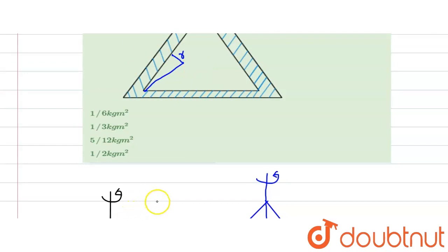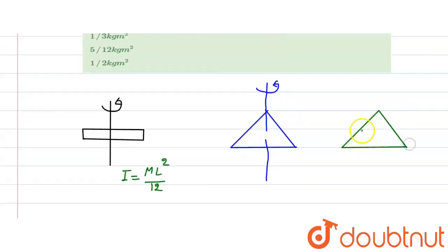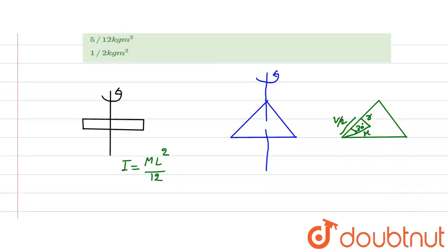The total length is l, so each half-length is l/2. Drawing the triangle, we need to find the perpendicular distance r from the center to each rod. Since the triangle is equilateral, each angle is 60°, so half of that is 30°. Let x be the slant distance from the vertex to the center.